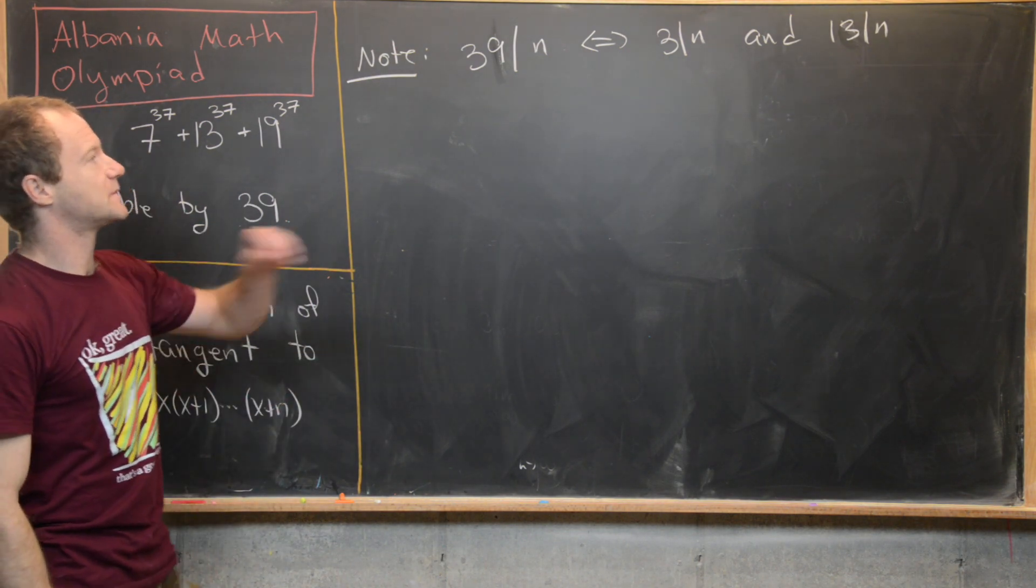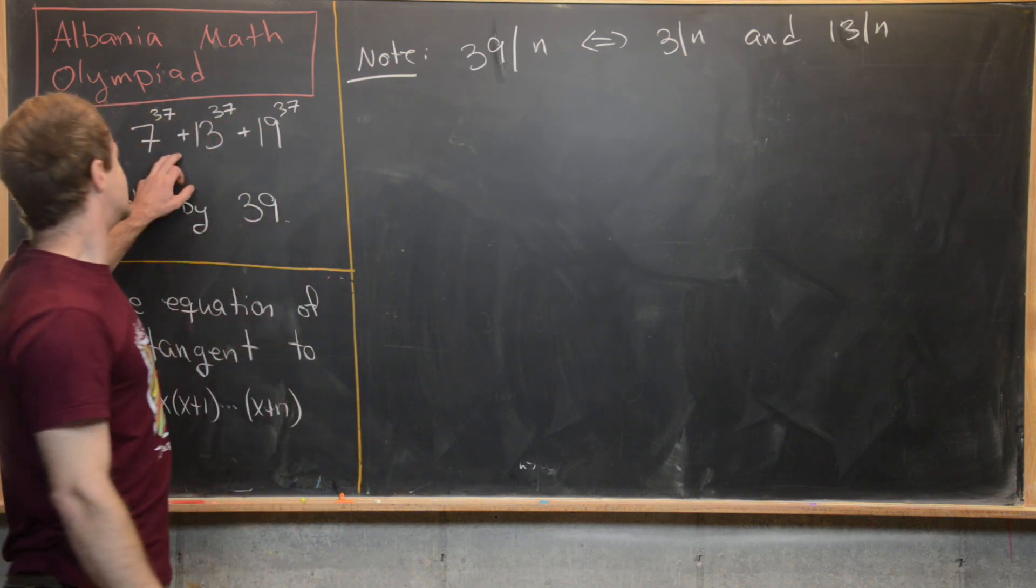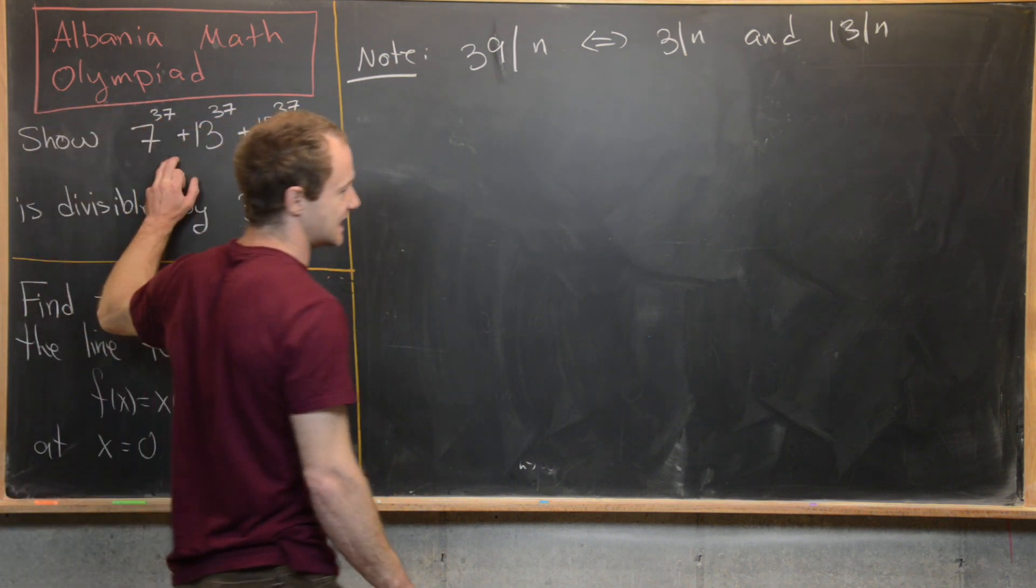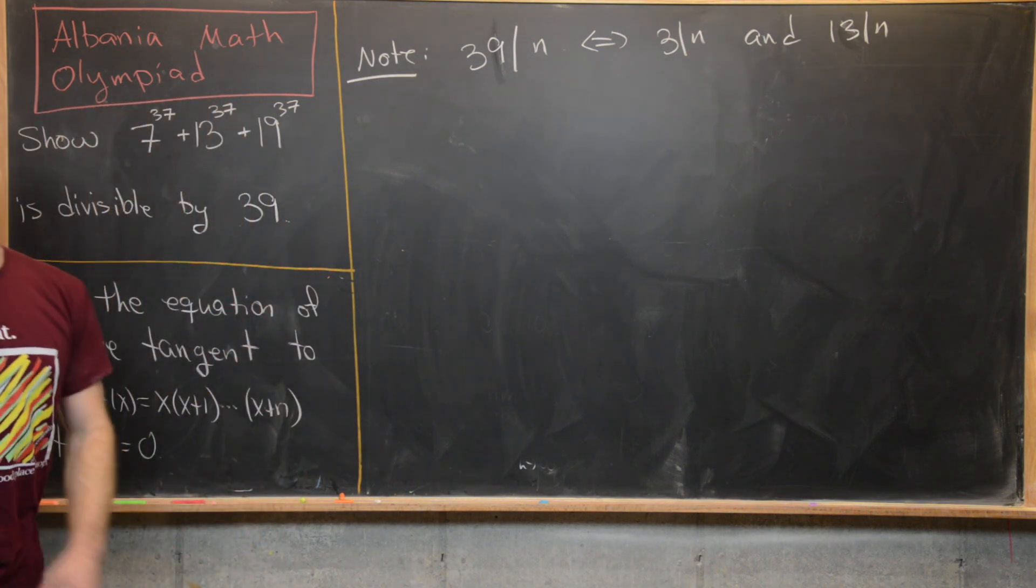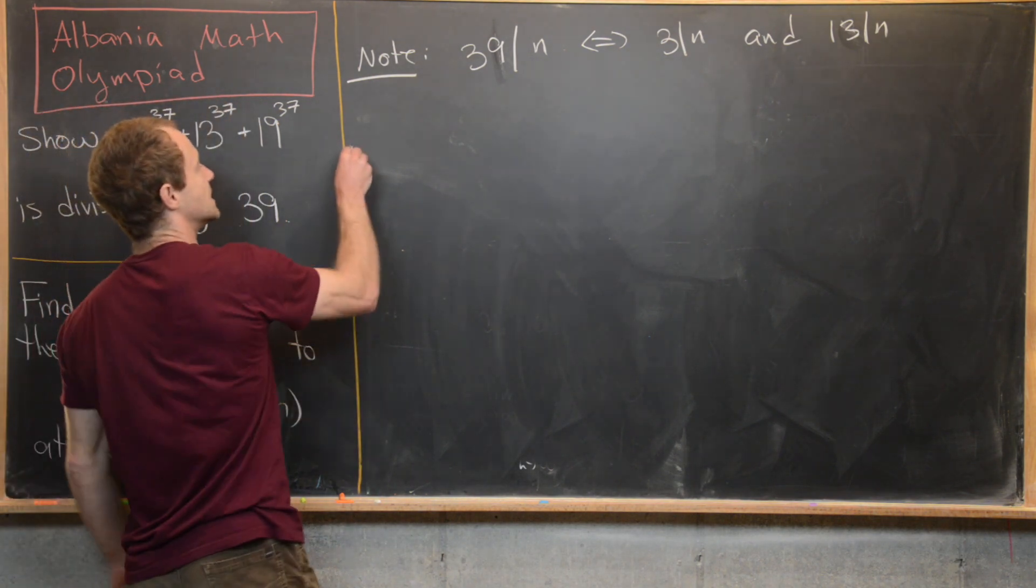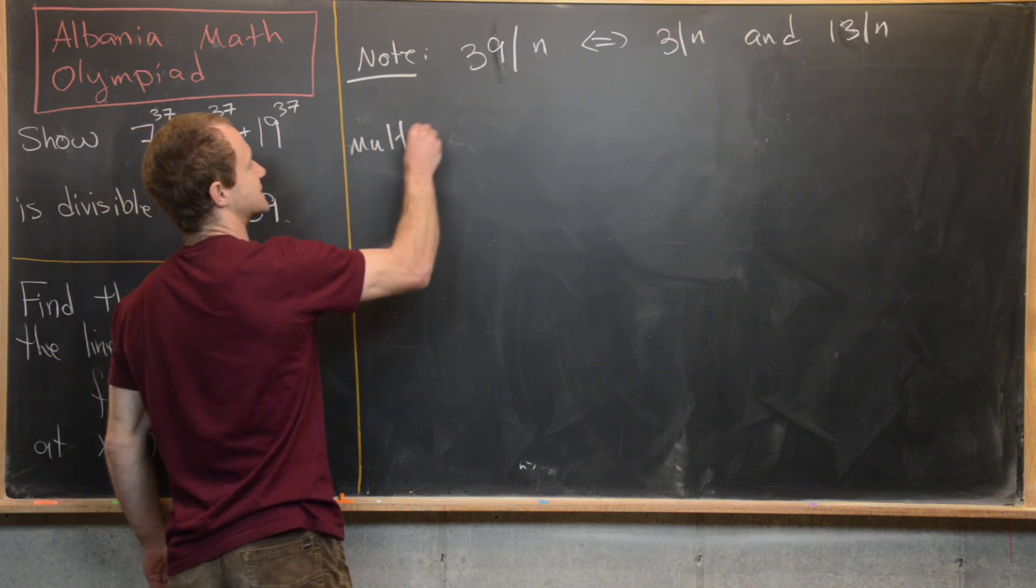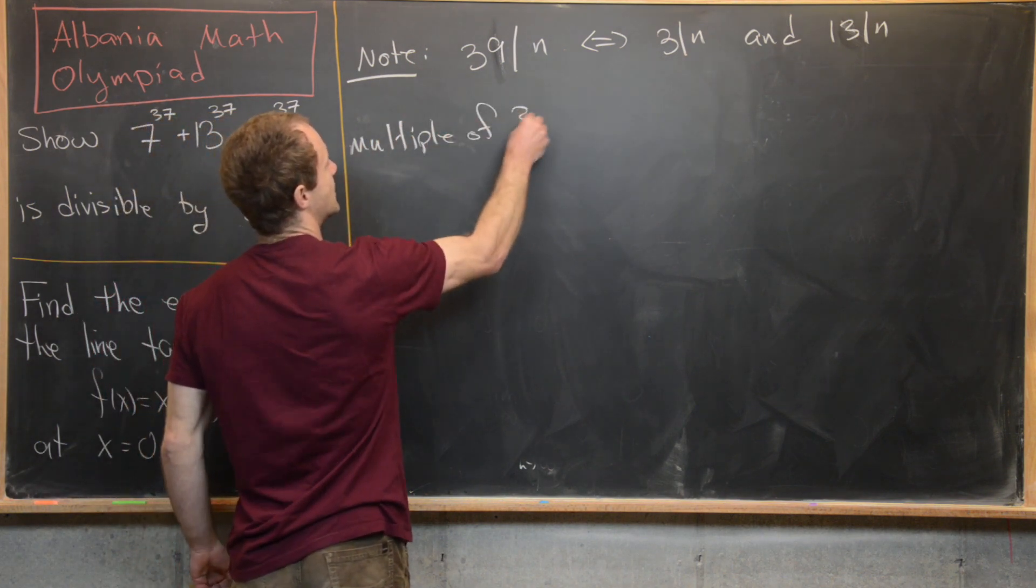And so what we really want to show is that 3 divides this. In other words, this thing is a multiple of 3, and then we'll also show that this thing is a multiple of 13 and then we'll be good to go. So let's maybe first show that it's a multiple of 3.